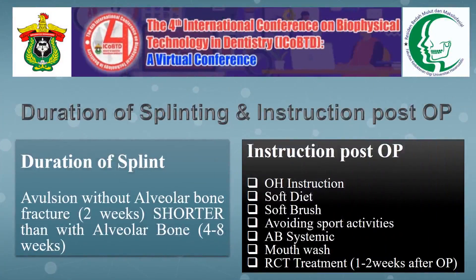Another factor in successful replantation is the duration of fixation and splinting. According to the International Association of Dental Traumatology (IADT), the duration of splinting is about two weeks using a flexible splint. However, if associated with an alveolar fracture, the splinting duration can be extended to four to eight weeks using rigid fixation to achieve the best healing process. In this case, we needed to immobilize the teeth for up to eight weeks because of the alveolar bone process fracture.